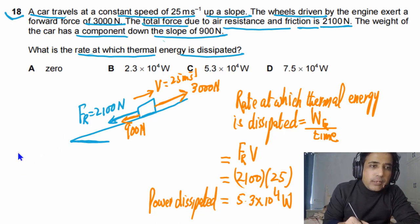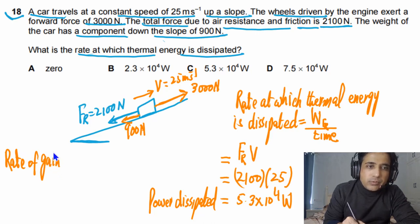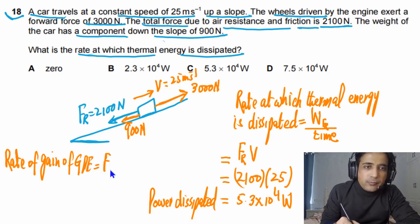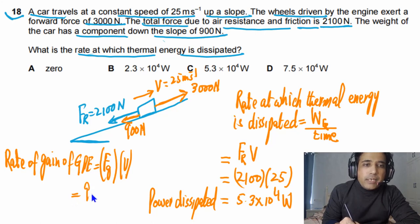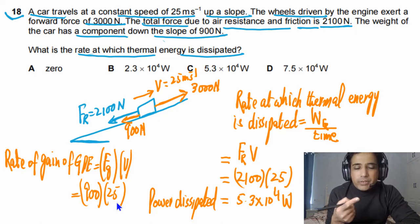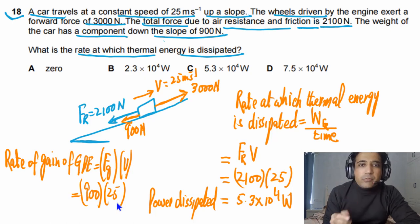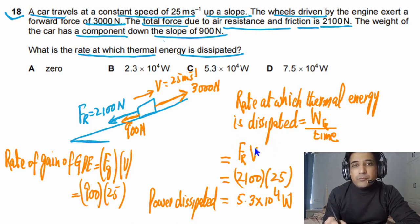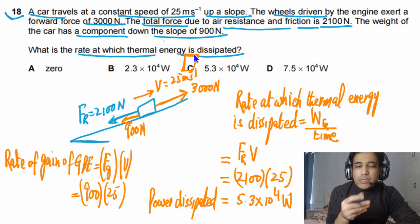Additionally, if you need to calculate the rate of gain of gravitational potential energy, that equals the component of weight down the slope times the speed — so 900 multiplied by 25. The answer for the thermal energy dissipation question is C. If your concept is clear and you understand the question, it is pretty straightforward.